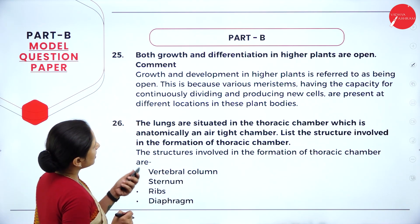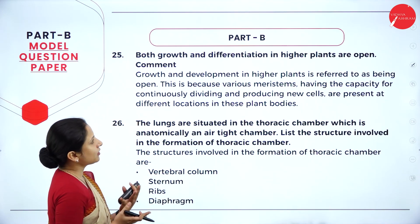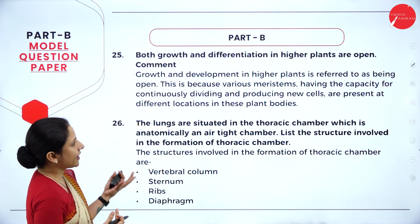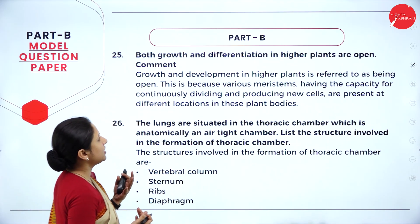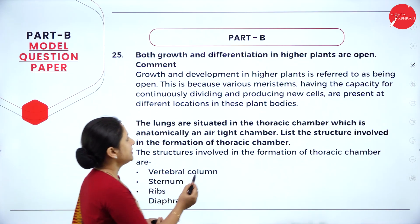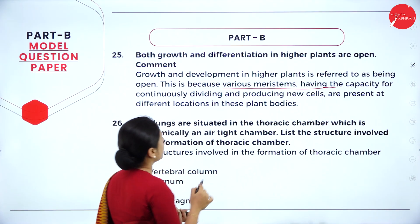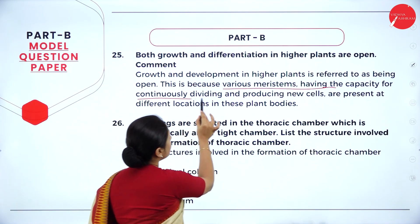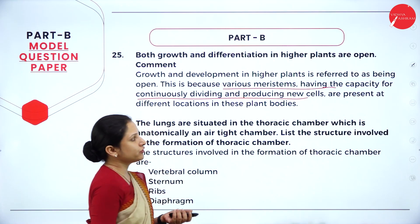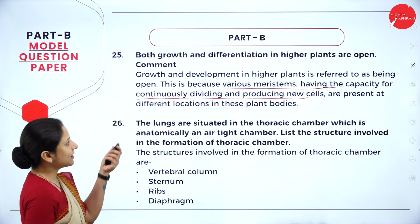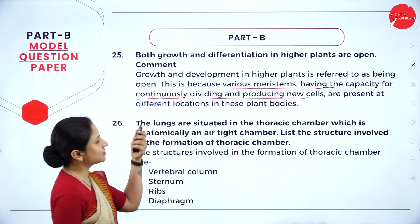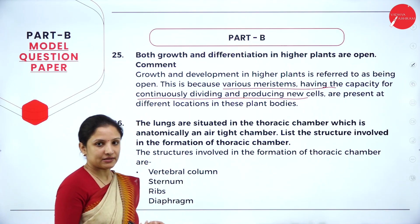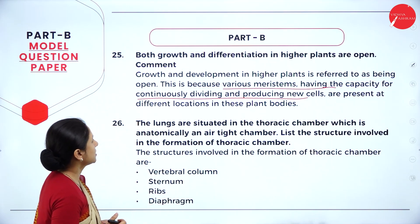Question 5: both growth and differentiation in higher plants are open — comment on it. Growth and development in higher plants is referred to as open because meristematic cells having the capacity to continuously divide and produce new cells are present at different locations throughout the plant body.